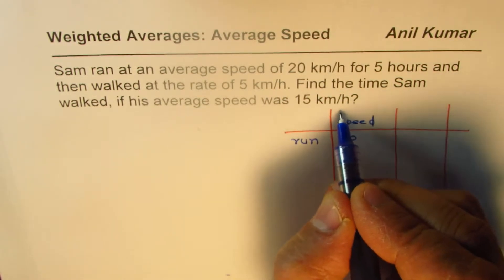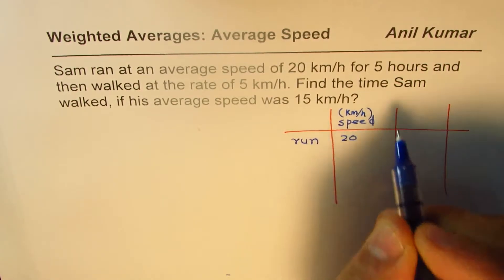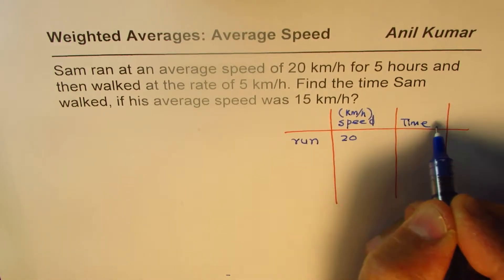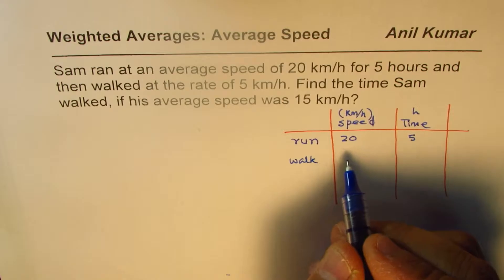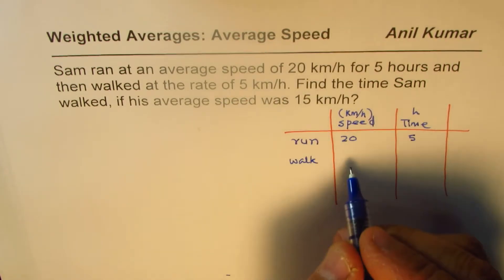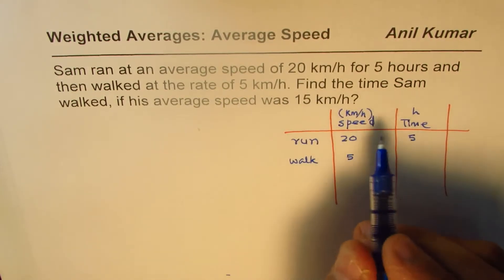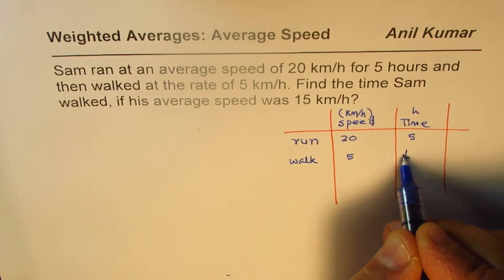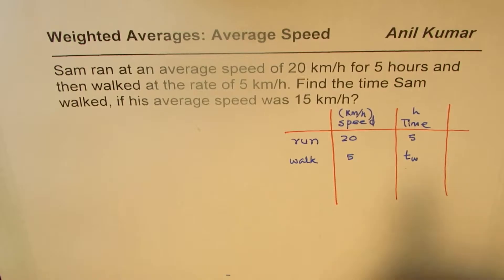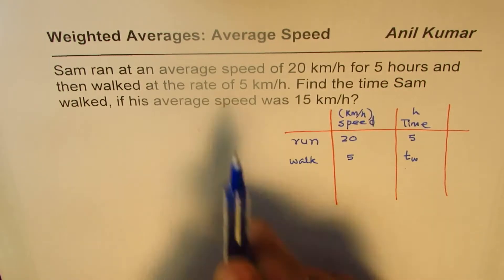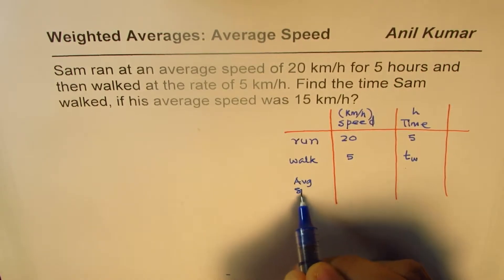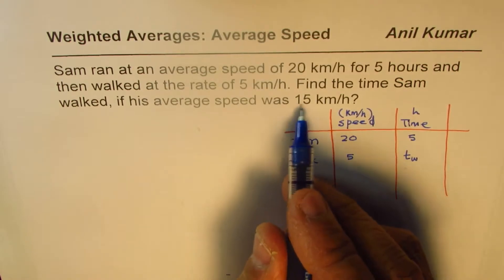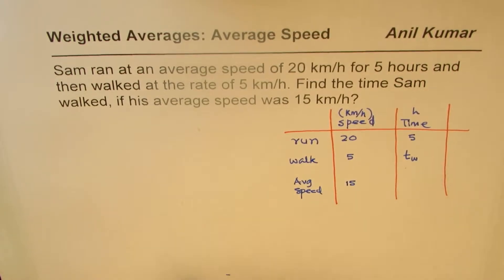The units are kilometers per hour and the time is in hours — five hours. As far as walking is concerned, we are given that the average speed for walking is 5, and the time we don't know, so we need to find the time for walking. What we do know is the overall average speed, which is 15 kilometers per hour.